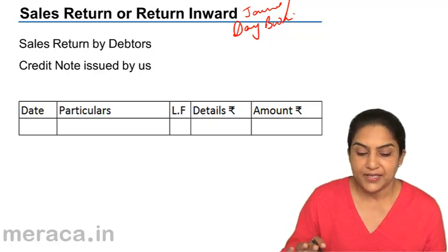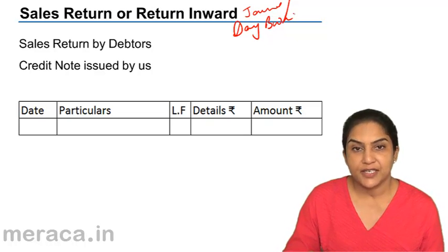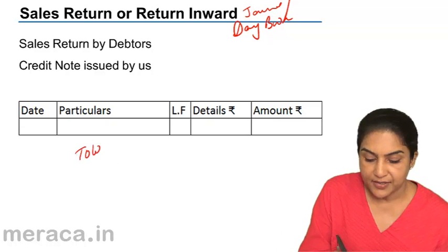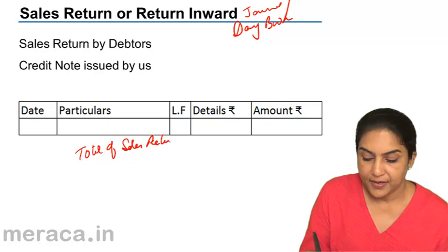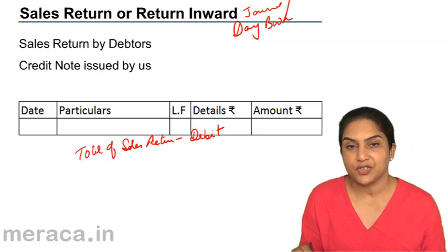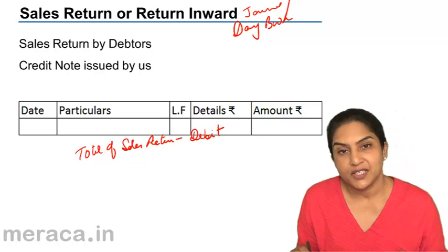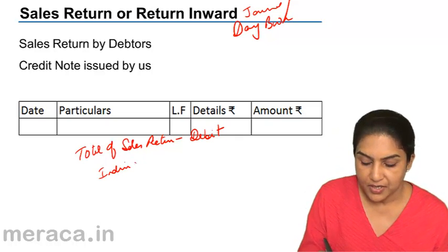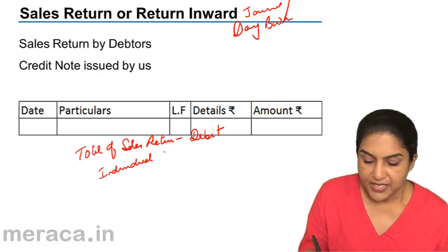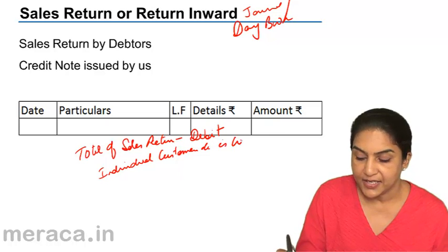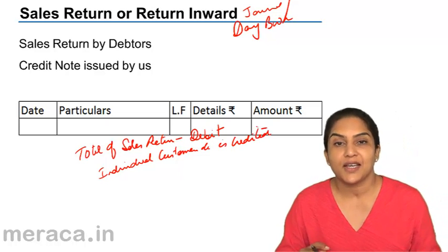The format is exactly the same. We enter the details, and the periodic total of the sales return is taken to the debit side of the sales return account. Individually, each customer's account is credited.